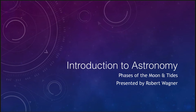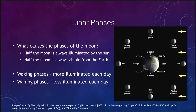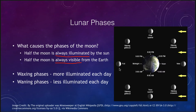The moon has a set of phases it goes through. Moon phases are caused by the illumination of the sun and the moon's position around the Earth. Two things are important here: half the moon is always illuminated by the sun, and half the moon is always visible from the Earth. In the new phase, half of the moon is still illuminated, but that is the half pointing away from the Earth, so we do not see it.